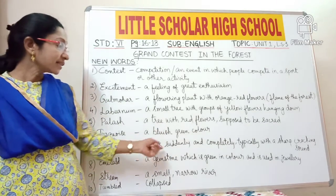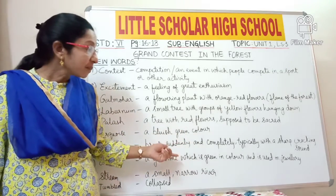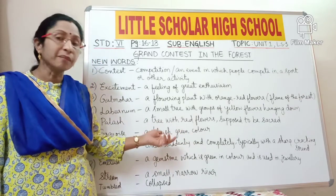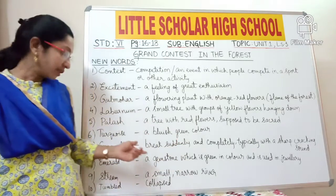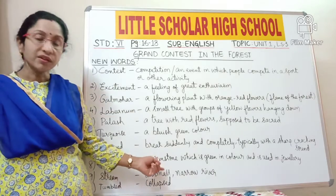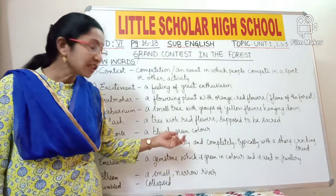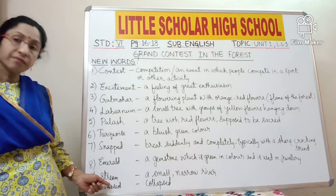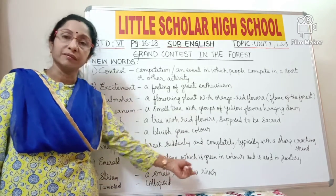Snap — to break suddenly and completely, typically with a sharp cracking sound. When something breaks, it makes a sharp cracking sound — that is called snap. Emerald — it is a gemstone which is green in colour and is mostly used in jewellery. Stream — it is a small narrow river.